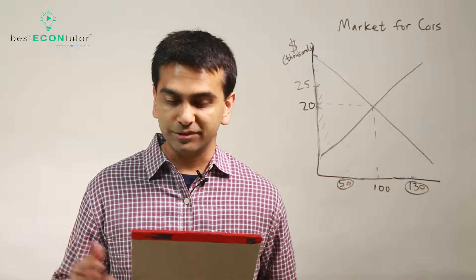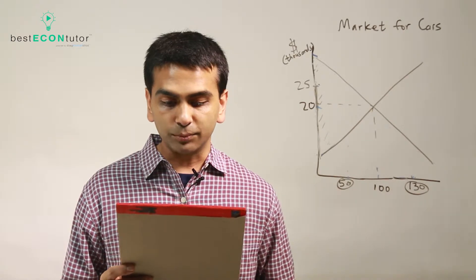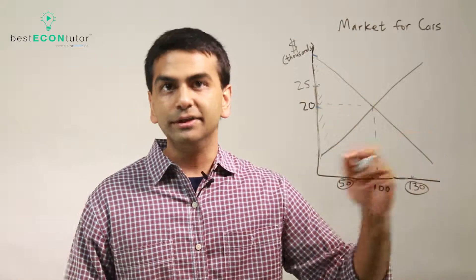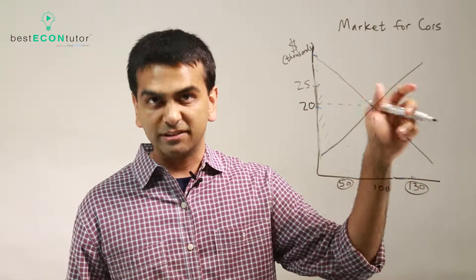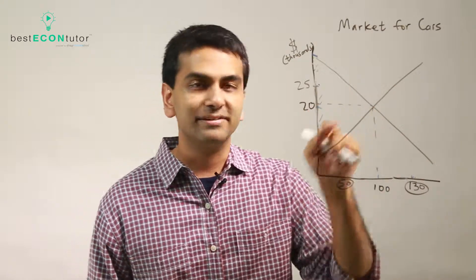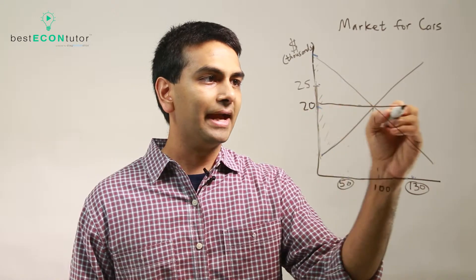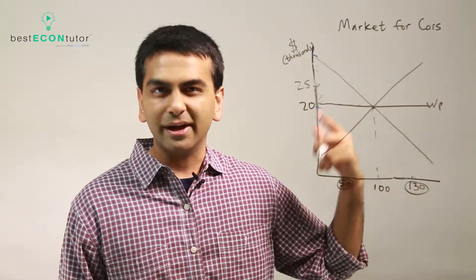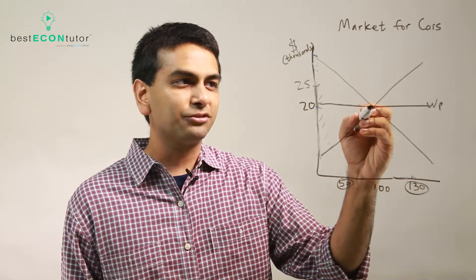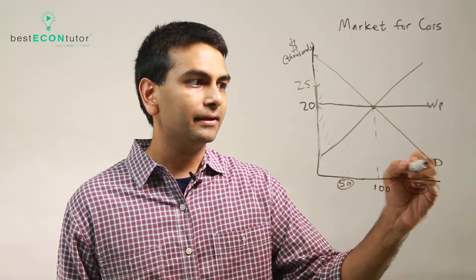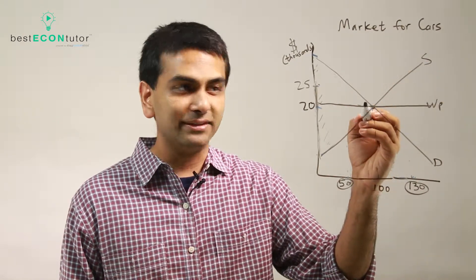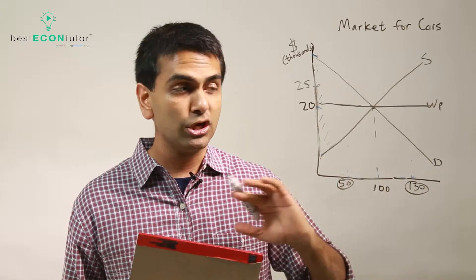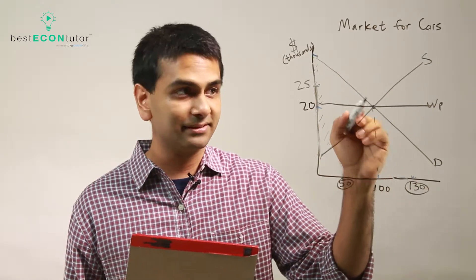Now let's look at some questions from students. First: what happens when the world price is equal to the domestic equilibrium price? We've talked about how if the world price is below domestic, you get imports, and if above, you get exports, with deadweight loss in autarky in both cases. But what if the world price is exactly $20,000? At a price of $20,000, the domestic demand is 100 and the domestic supply is also 100, so there's actually no need to import or export. The short answer is: if the world price equals the domestic equilibrium price, there will simply be no importing or exporting, and there's also no deadweight loss because that's the best you can do.